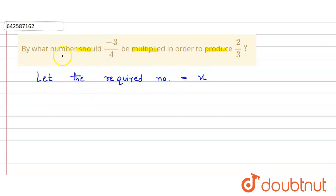So here according to the question, it is given that by what number should minus 3 divided by 4 be multiplied, and here we have considered that number to be x.